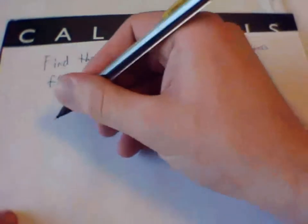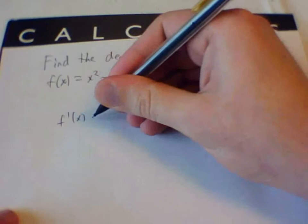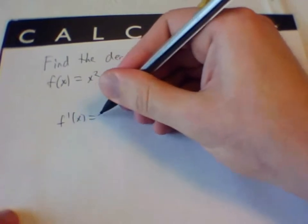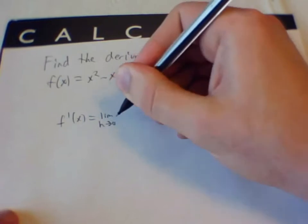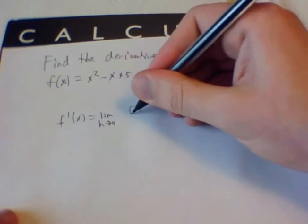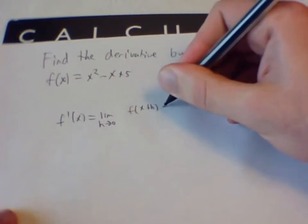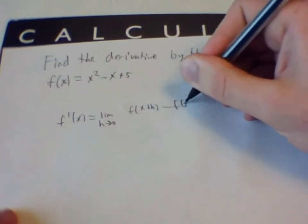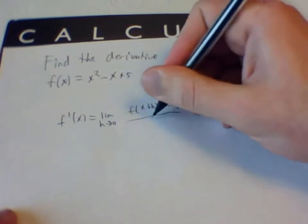So we have f prime of x equals the limit as h goes to zero. We have f of x plus h minus f of x over h.